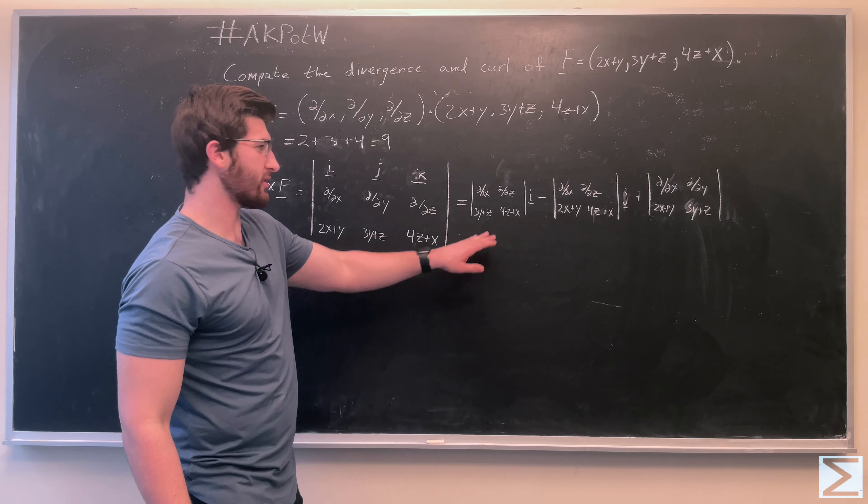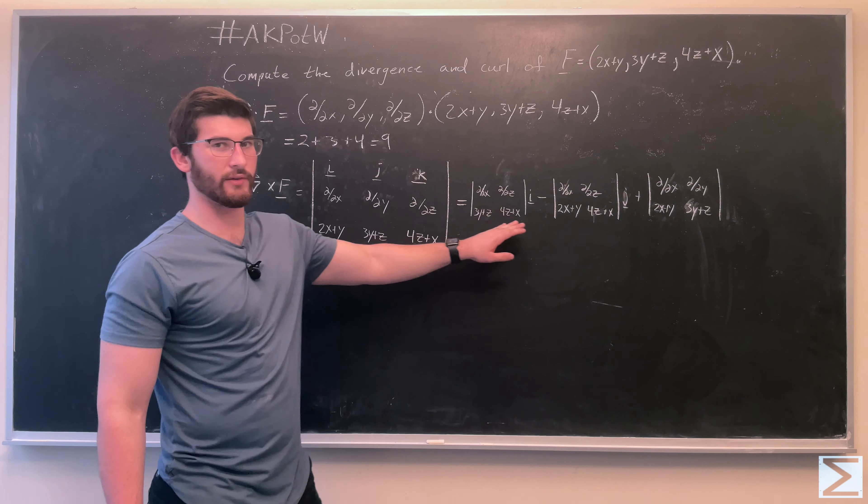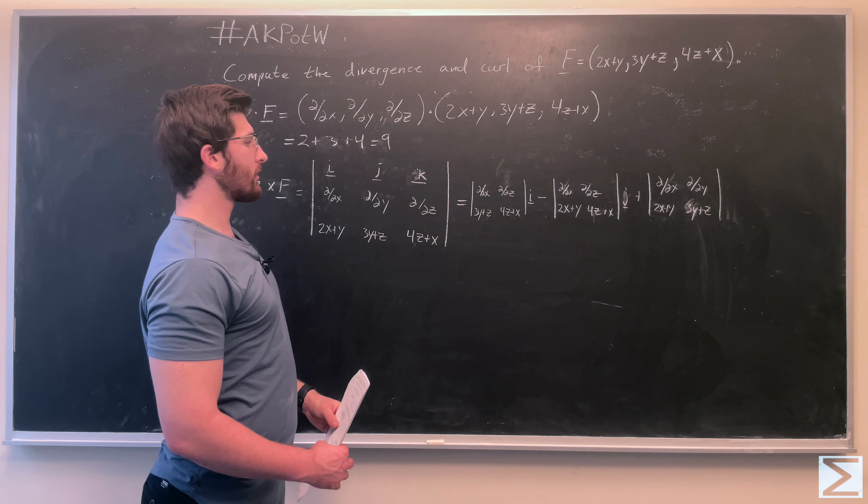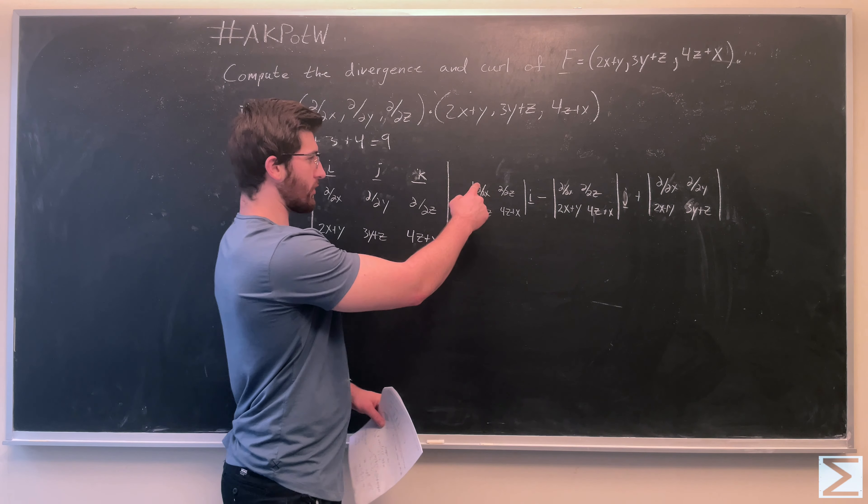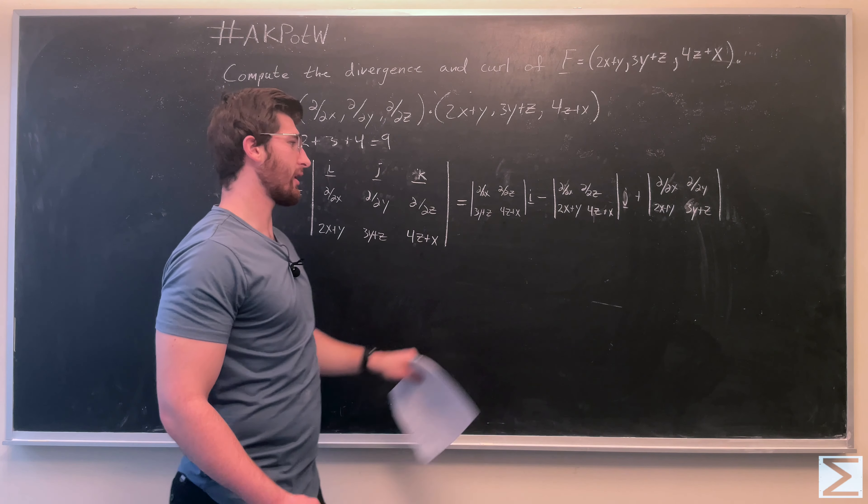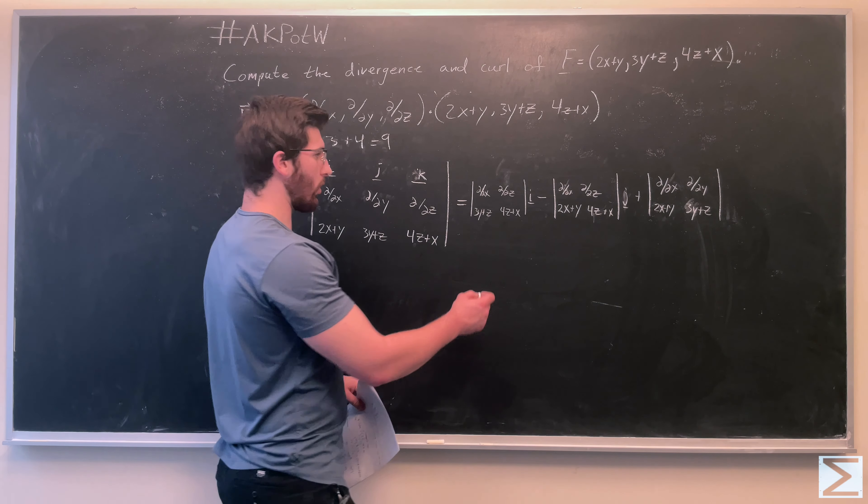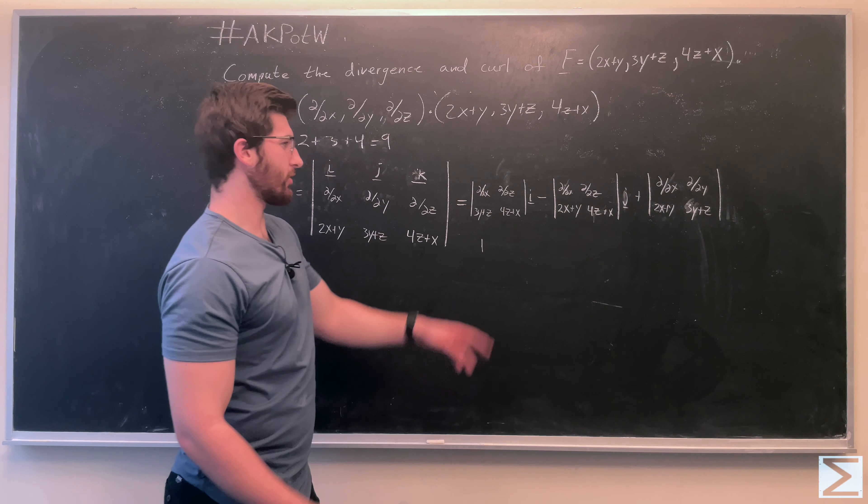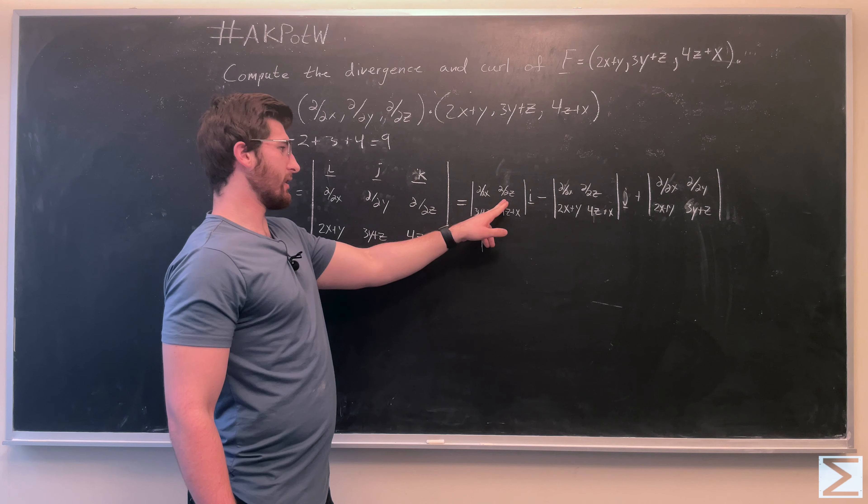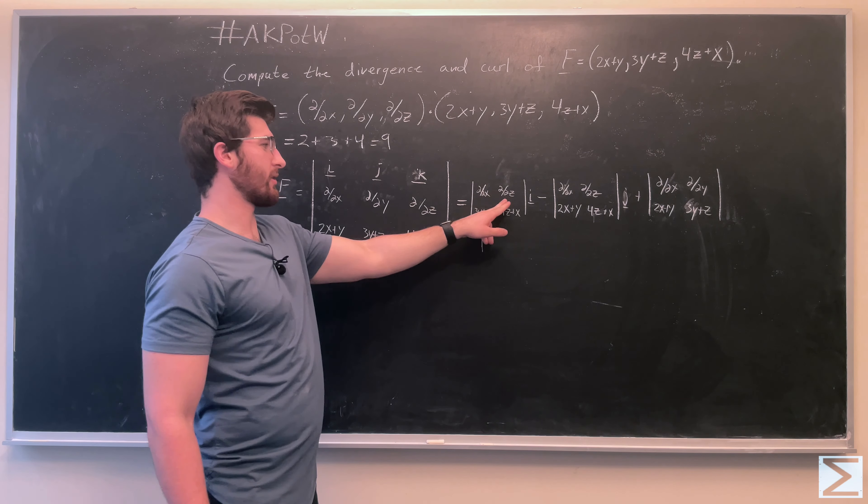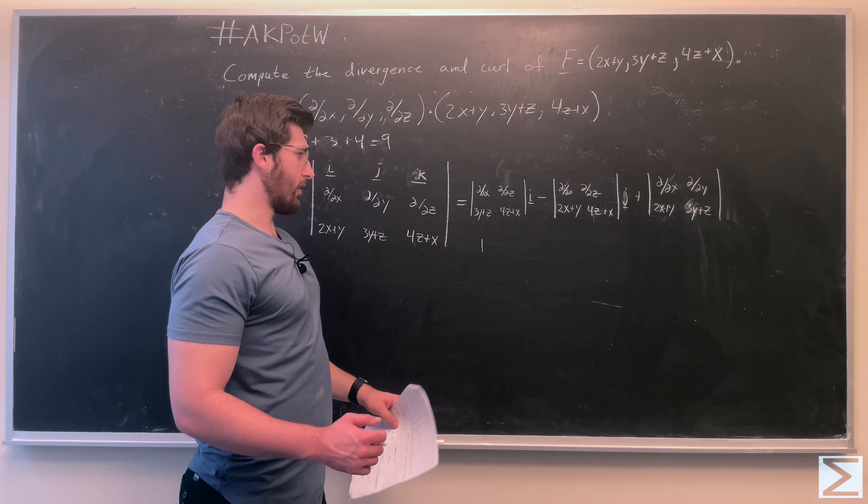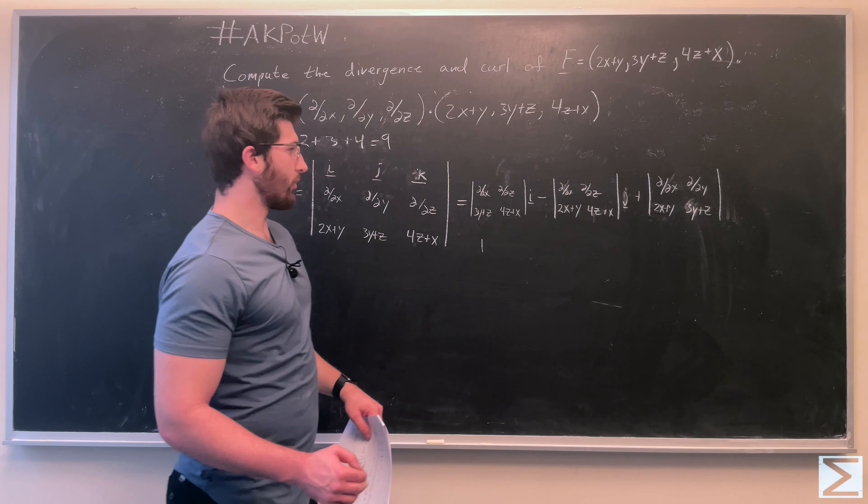So once you write it out, this is what each individual matrix you're going to evaluate is going to look like. So here we'll do the first one, the partial derivative of 4z plus x with respect to x is going to be 1, and here the partial derivative with respect to z of 3y plus z is going to be equal to 1.